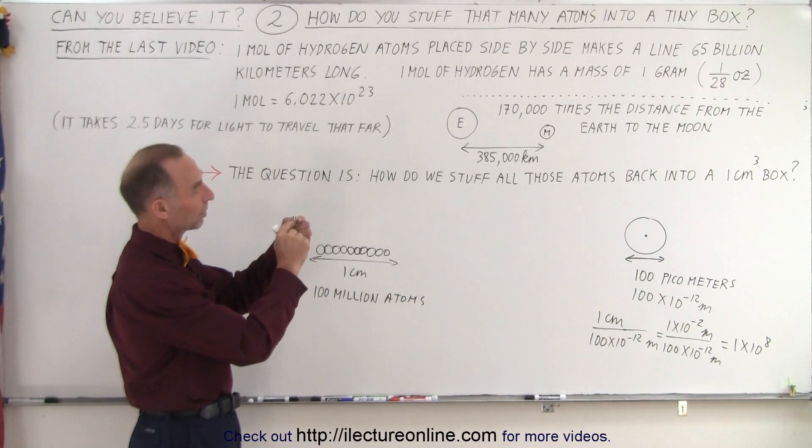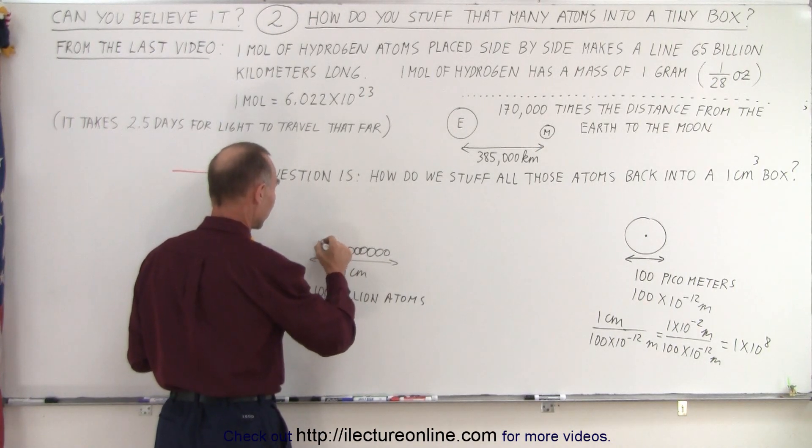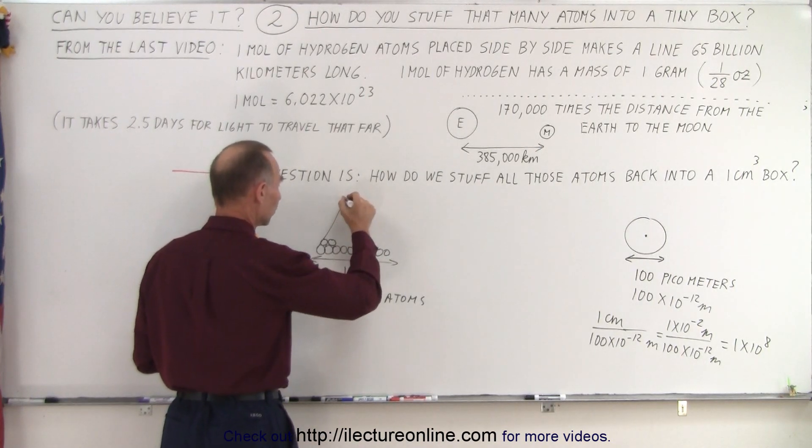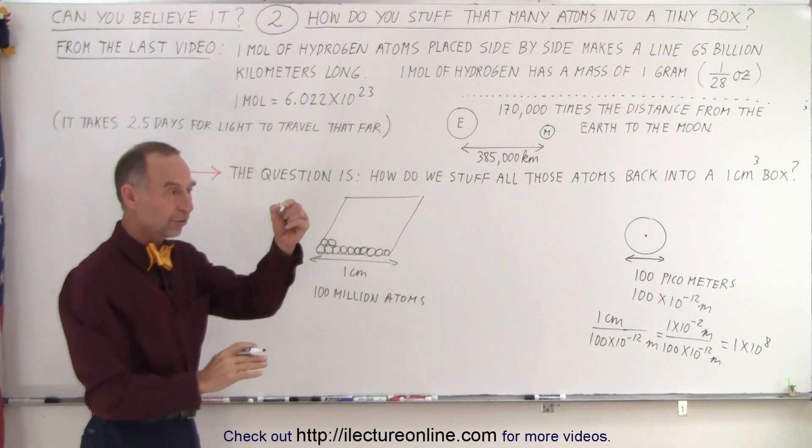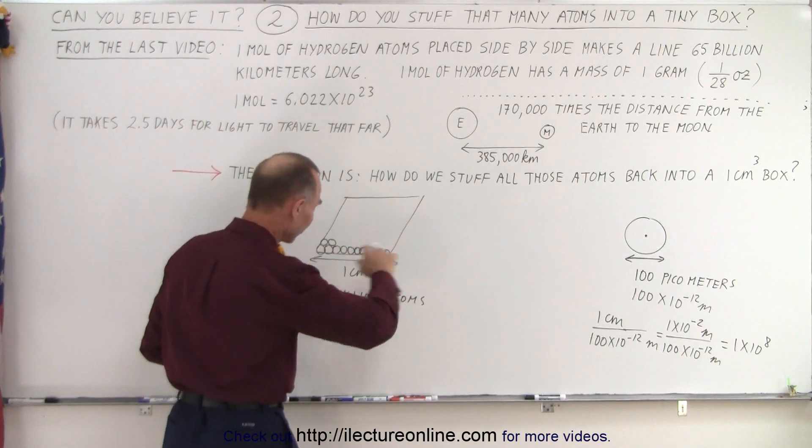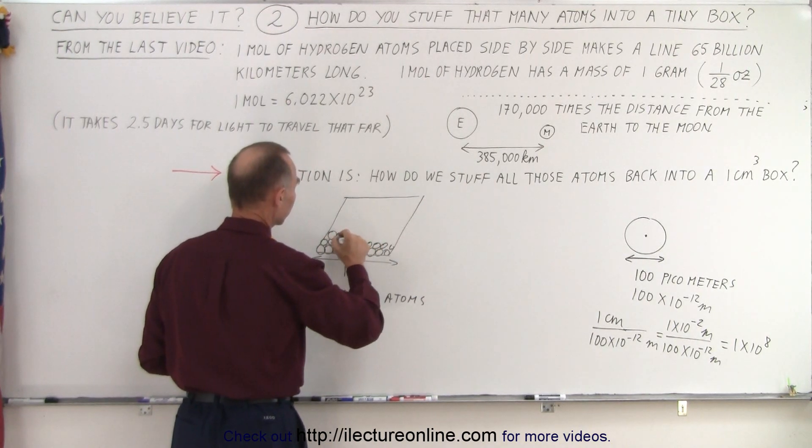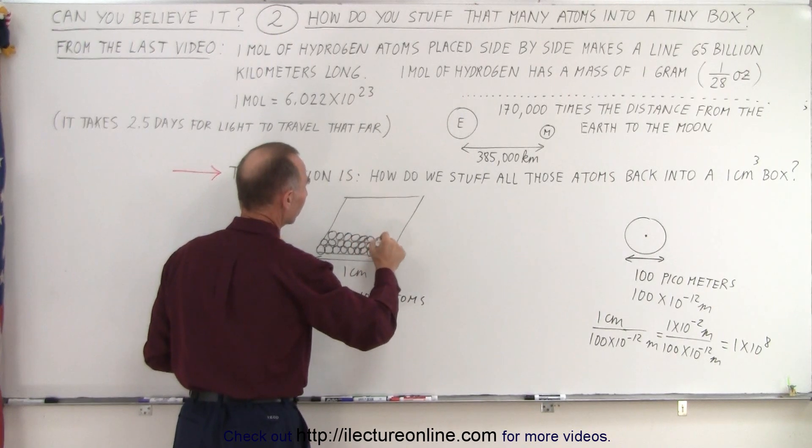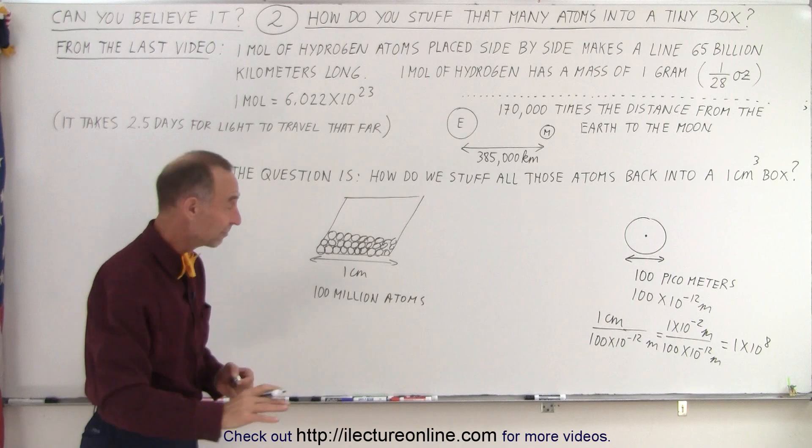So along one of the edges, you could put 100 million atoms. Then you make a second line right next to it. We're going to fill the base, the bottom layer of this cube, with lines of atoms. So you would have another 100 million and another 100 million, all the way until the entire base is filled with atoms.